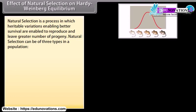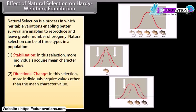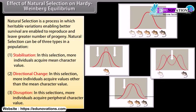Natural selection is a process in which heritable variations enabling better survival allow organisms to reproduce and leave a greater number of progeny. Natural selection can result in three conditions in a population: Stabilization — more individuals acquire the mean character value; Directional Change — more individuals acquire values other than the mean character value; and Disruption — more individuals acquire peripheral character values.